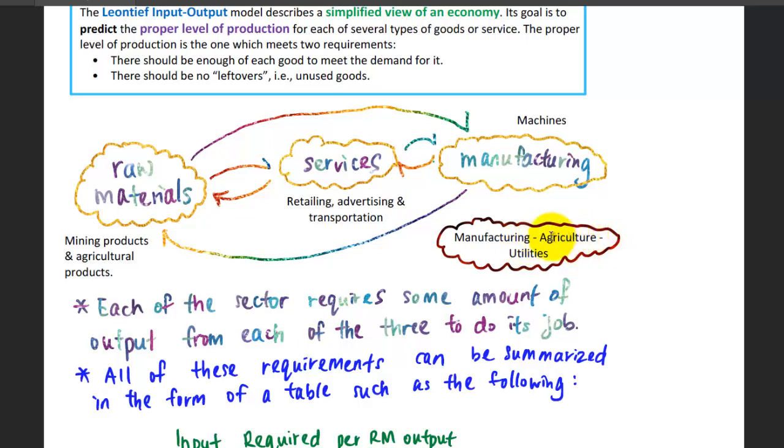For agriculture, you're going to get the raw materials such as flour and sugar. For utilities, you need water and electricity.